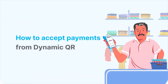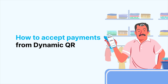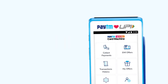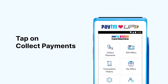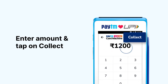Here's how you can accept payments from Dynamic QR using your Paytm Card Machine. First, tap on Collect Payments. Then, enter the amount and tap on Collect.